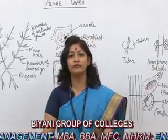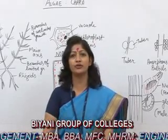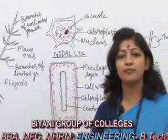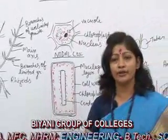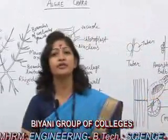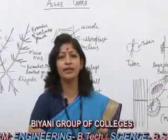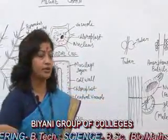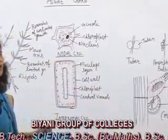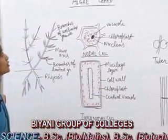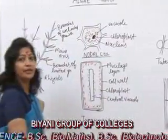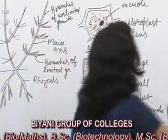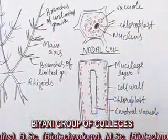Today I am going to deliver a lecture on Algae Chara. Algae are the plants of subgroup Thallophyta. These are the plants which lack roots, leaves and stems. Today we will discuss Chara. Chara belongs to the family Chlorophyceae, which means it contains green pigments.